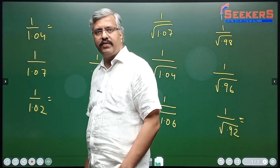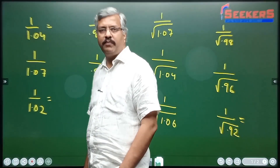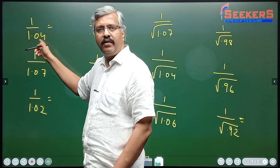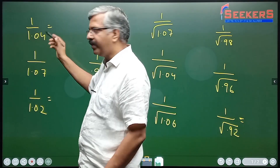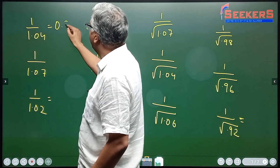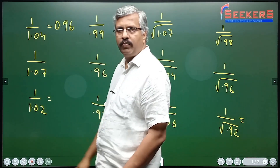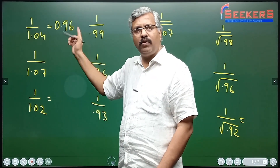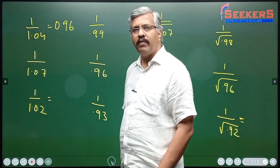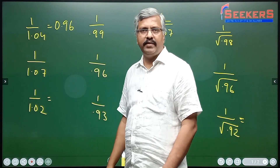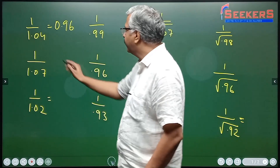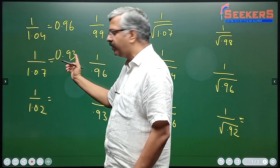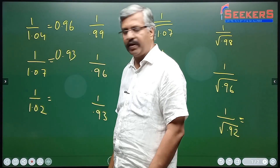Sometimes you land up with some cases of this kind: 1 by 1.04. Understand, this is 4 more than 1, so the answer will be 4 less than 1 — the answer will be 0.96. This denominator is 4 more than 1, so the answer will be 4 less than 1. Here it is 1.07, so the answer should be 0.93 because this is 7 more than 1, so the answer should be 7 less than 1.